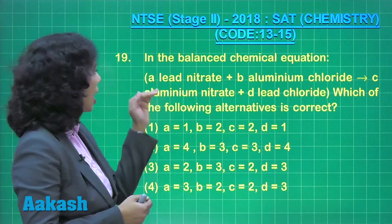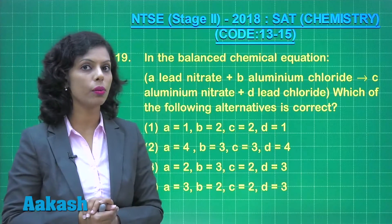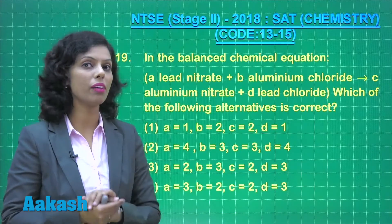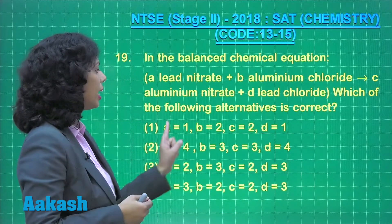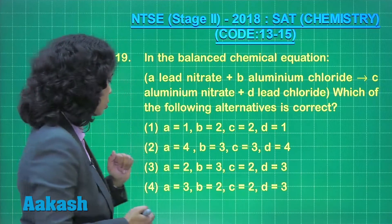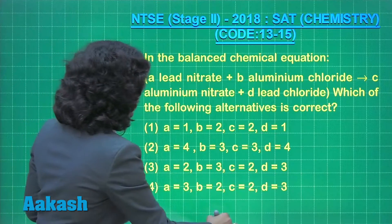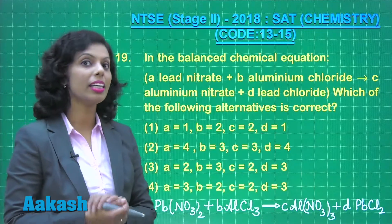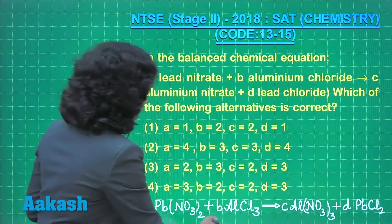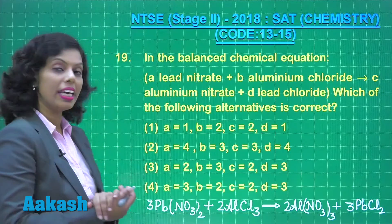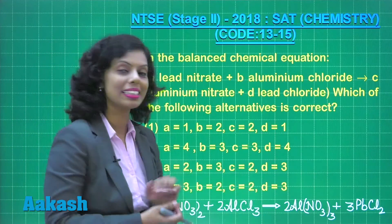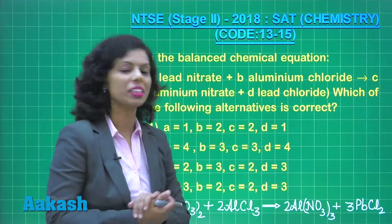First, write down the chemical equation and balance it to find the values of a, b, c, and d. After balancing the chemical equation, we find that the value of a is 3, the value of b is 2, the value of c is 2, and the value of d is 3.